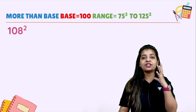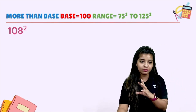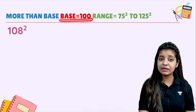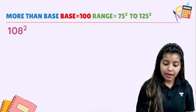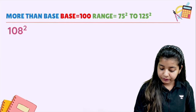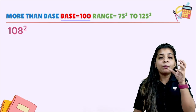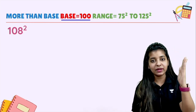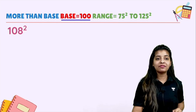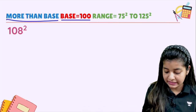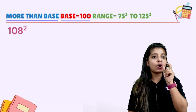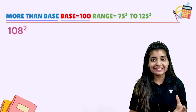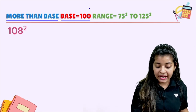Here is the first portion everyone. Before that, note a few things. More than a base — here we are going with base 100. I repeat, here the base we are taking is 100. That means, whatever numbers we are going to see, the base value we will be taking is 100. The questions here are more than the base. We are going to learn the square trick for numbers that are more than 100, in the range of 100 to 125.